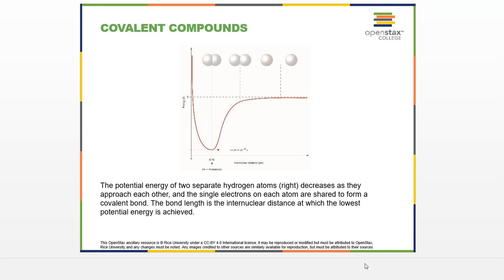In the case of a covalent compound, you're going to have the sharing of electrons between two or more nonmetals. Here we have an example of hydrogen H2, which is really a molecular element more than a covalent compound, but the idea is the same.